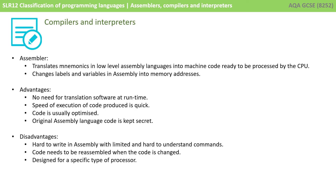An assembler translates mnemonics in a low-level assembly language into machine code ready to be processed by the CPU, and changes labels and variables into memory addresses. The advantages are no need for translation software at runtime, quick speed of execution, the code is usually optimized, and the original assembly language code is kept secret. The disadvantages are it's hard to write in assembly with limited and hard-to-understand commands, code needs to be reassembled whenever it is changed, and assembly code is always designed for a specific type of processor.